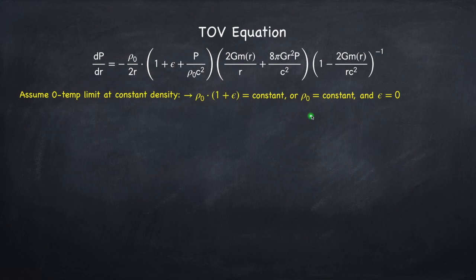We can also interpret constant density to just mean that rho-naught is constant, and take epsilon here to be zero. Either way we'll get the same result with a slightly different interpretation of the density.